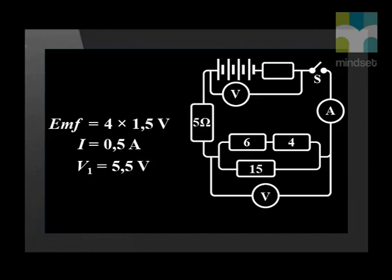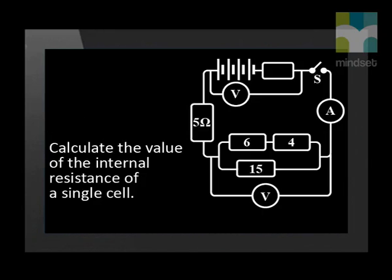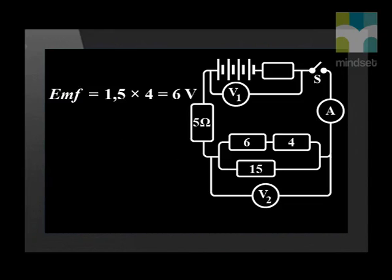Voltmeter V1 reads 5.5 volt when the switch is closed. Calculate the value of the internal resistance of a single cell. First, let's find the EMF which is 1.5 volt times 4 and equals 6 volts.